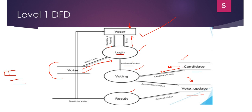Once the voter casts a vote, the vote will be updated in the database. There will be a vote update recording that one voter has cast a vote. The updated votes are stored in a data store. Candidate information was in a data store, voter information was in a data store, and the updated votes are also stored in a data store.